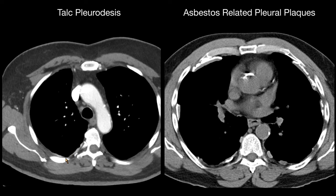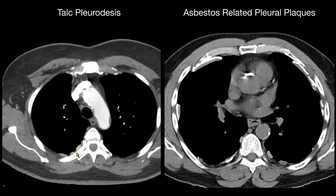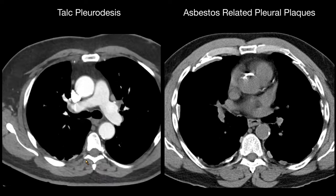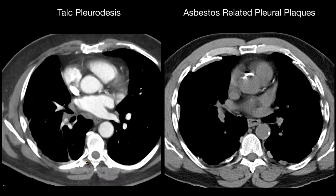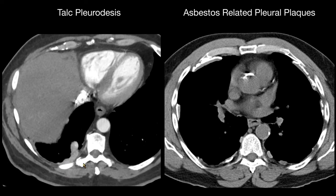First, pleurodesis is usually unilateral, and asbestos-related pleural disease will be bilateral — though of course a patient can have talc pleurodesis done on both sides. Second, what you usually see in pleurodesis are these hyperdense nodules in the pleura, rather than really dense calcifications like you see with asbestos-related pleural plaques. Also, the plaques in asbestos will be elongated, whereas in pleurodesis they have this more nodular appearance.